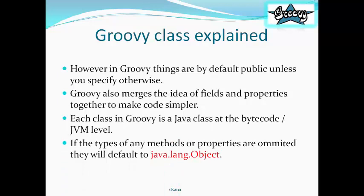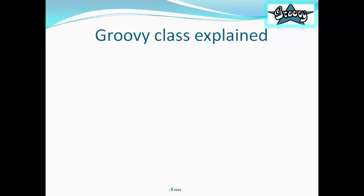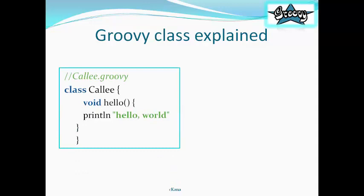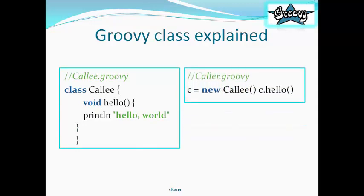If the types of any methods or properties are omitted, they will default to Java.lang.object at the bytecode JVM level. You can also use another class implemented in Groovy. For example, we have a callee class and that is used by the caller.groovy. Make sure that the class path is fine.